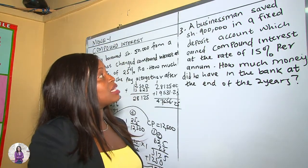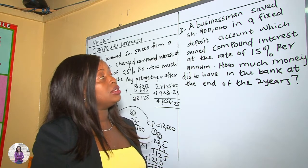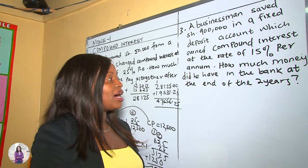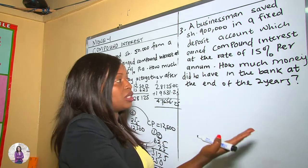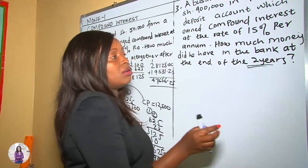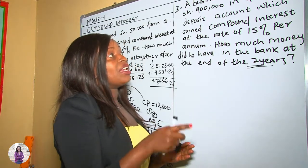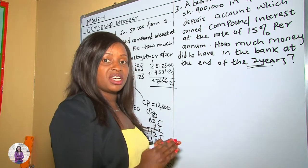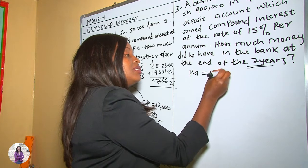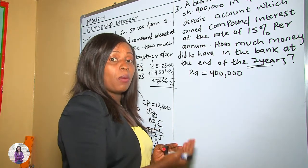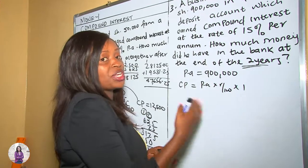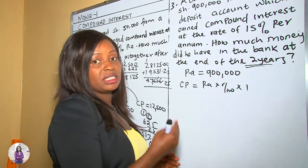In our next example, a businessman saved 900,000 shillings in a fixed deposit account which earned compound interest at a rate of 15% per annum. How much did he have in the bank at the end of two years? We already know the principal is 900,000 shillings. We need to find the compound interest for each year.